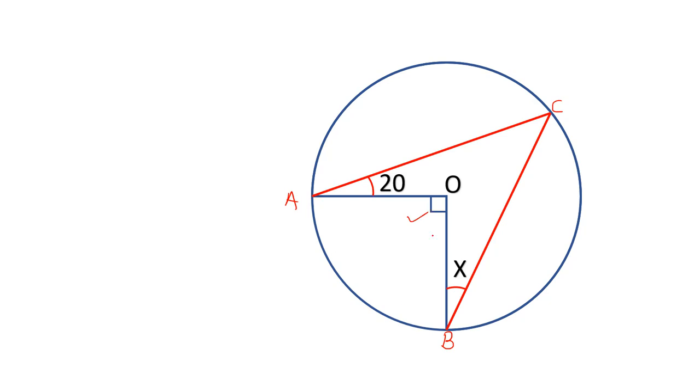This arc at the center, the arc AB subtend angle AOB at the center, this angle is twice the angle subtended by the arc at the circle. So angle AOB is twice ACB. This particular concept we'll use here.